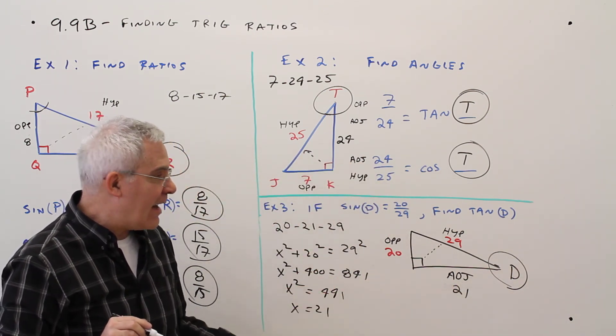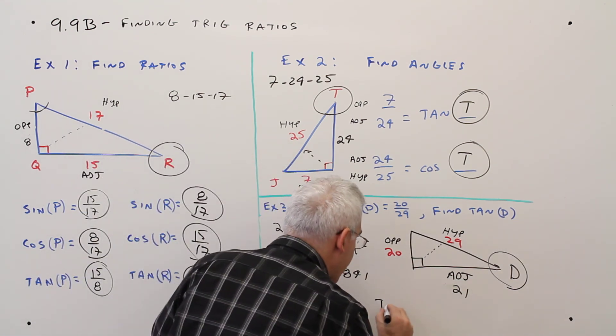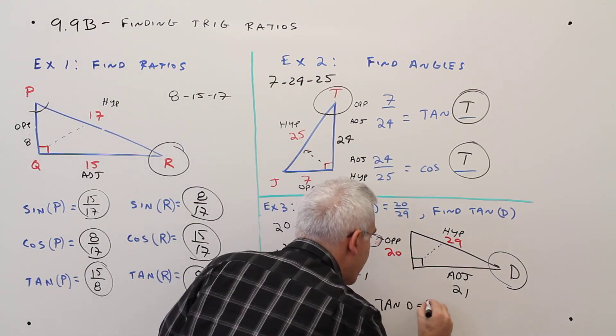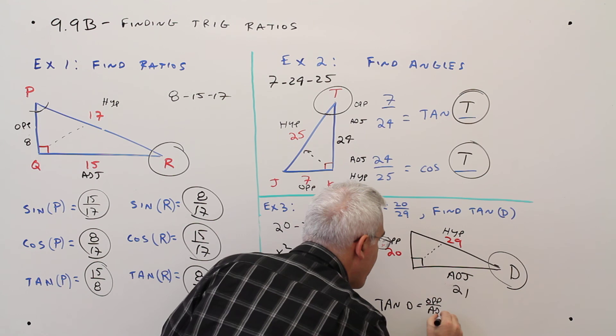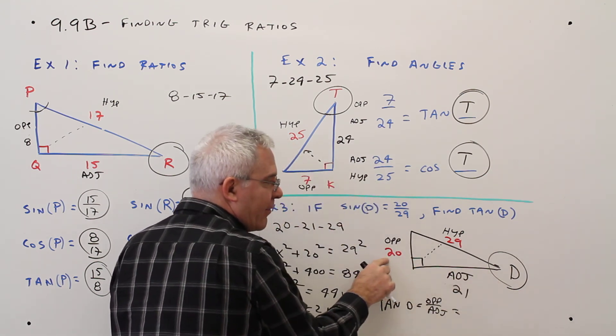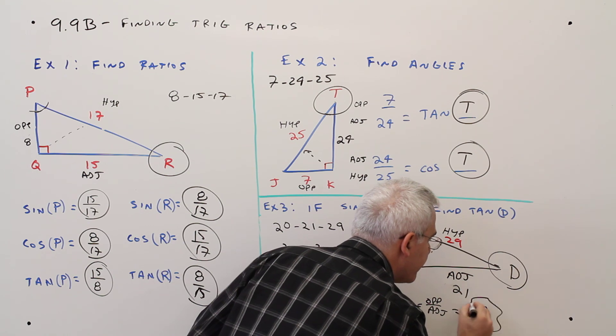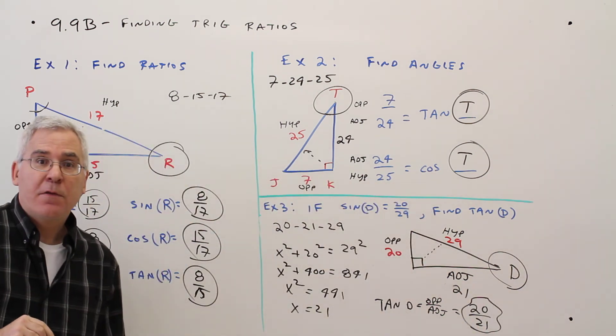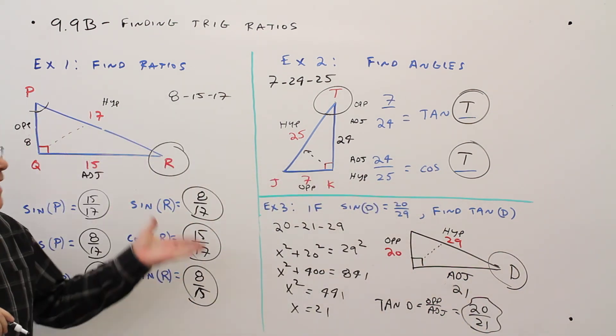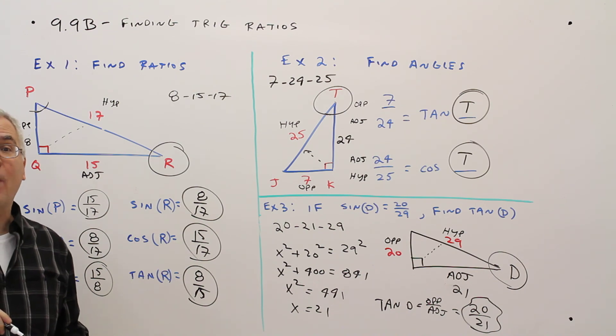So now, the tangent of D is going to be opposite over adjacent, will be 20 over 21. So, there you have it. A few examples using SOHCAHTOA.